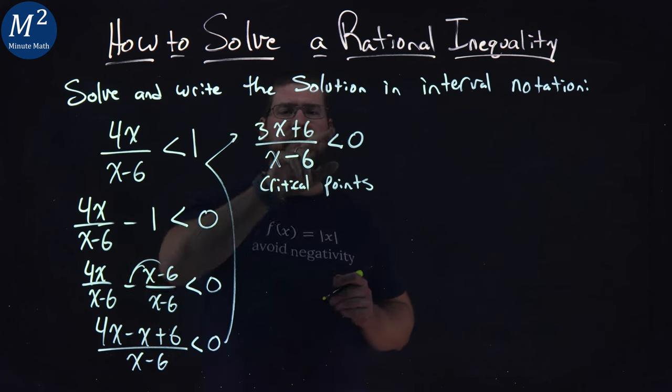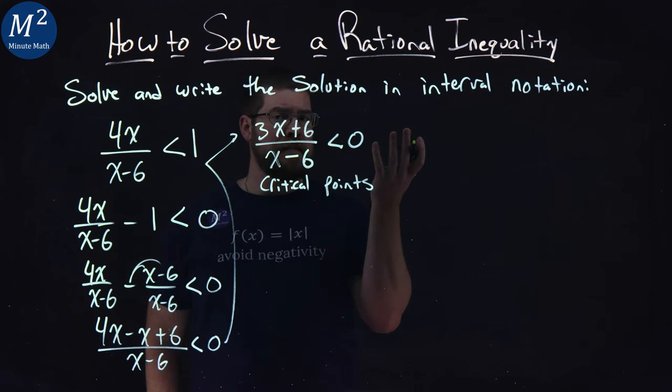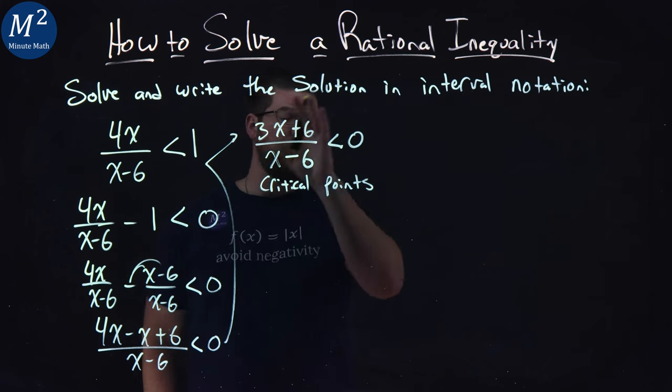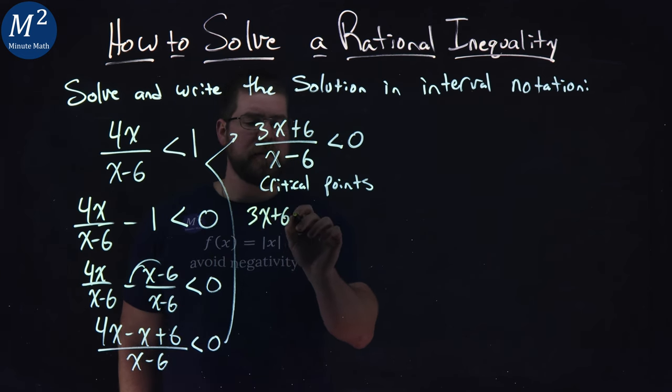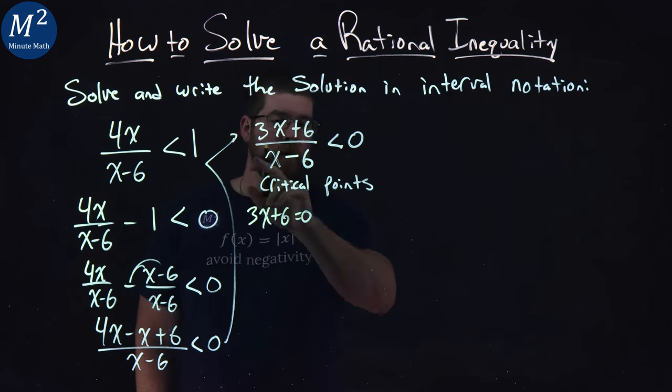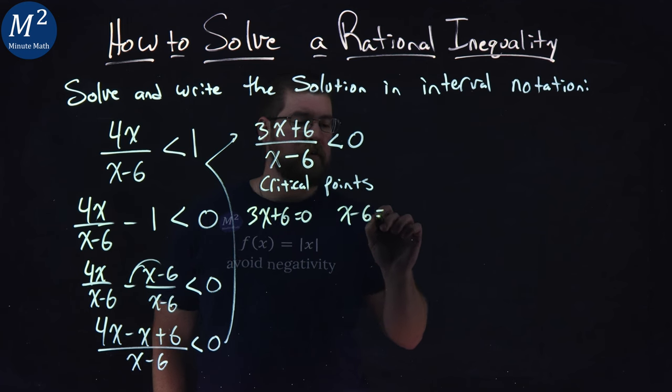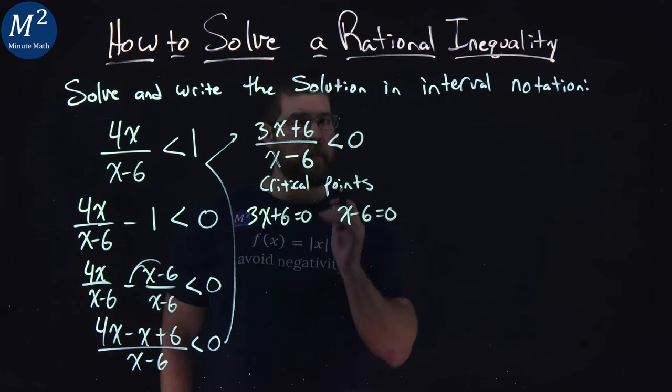From here, we have 3x plus 6. Well, if the numerator is equal to 0, then the whole thing becomes 0. So 3x plus 6, we set equal to 0. The denominator, we have x minus 6 equal to 0. Setting the numerator and denominator equal to 0.